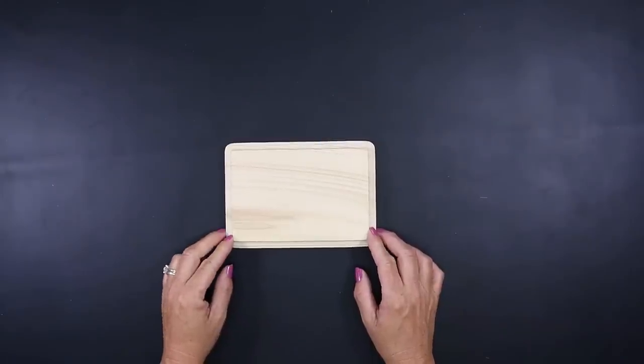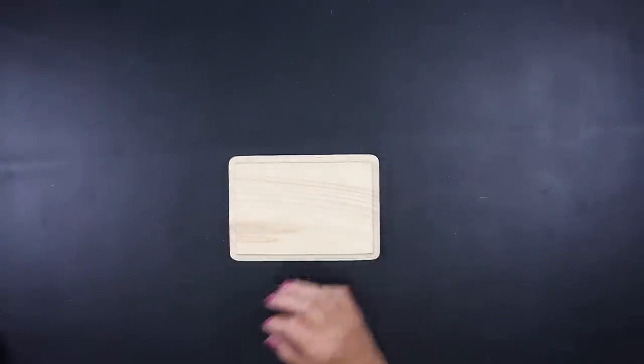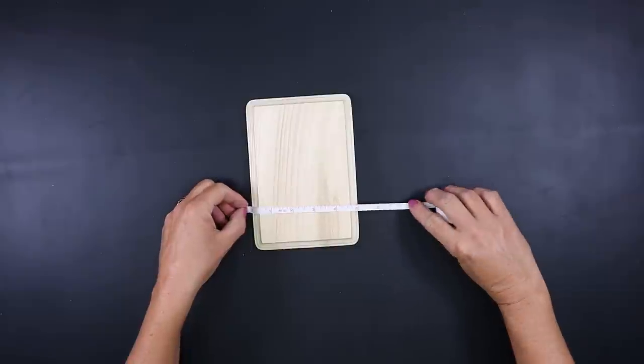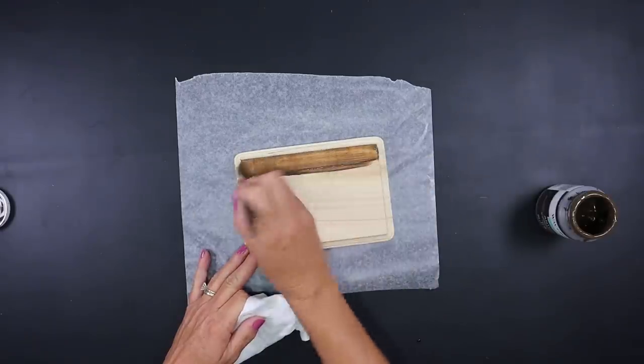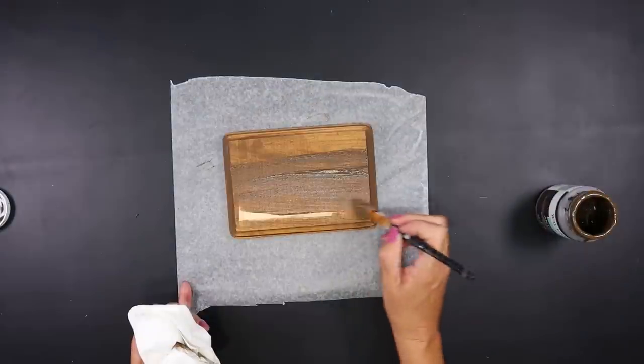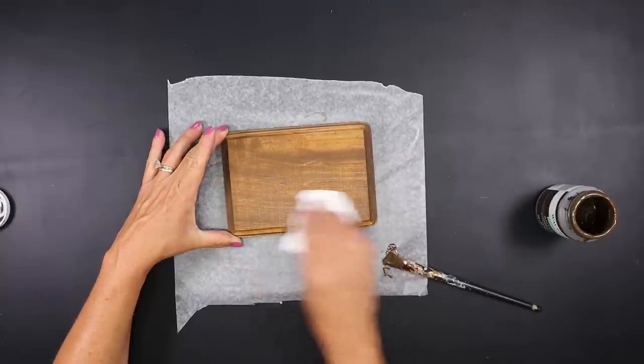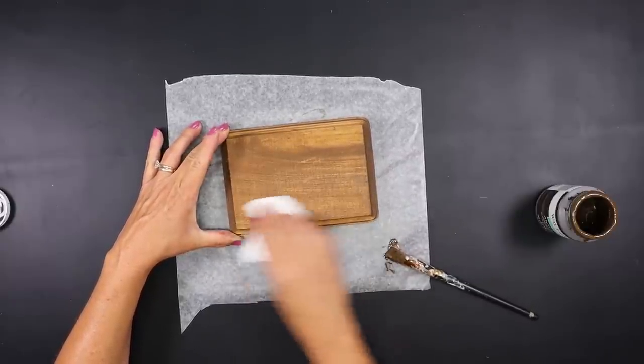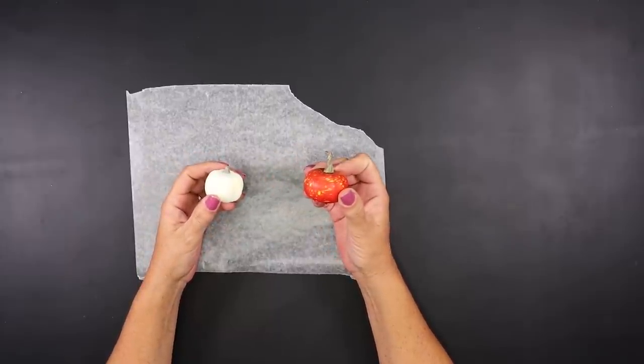Using one of Dollar Tree's wooden plaques, they come in several different shapes. This is the rectangular one. It measures seven and a quarter inches by five and a quarter inches. I'm going to give mine a coat of antique wax over the entire piece, but you can paint yours whatever color you like. I wanted mine to have more of a wood tone to it. You're also going to need a few different sized pumpkins. These came off of Dollar Tree picks or bundles.